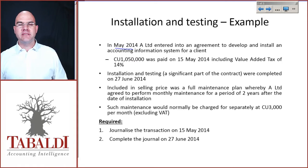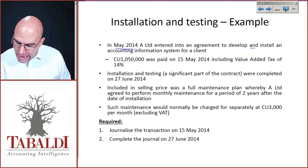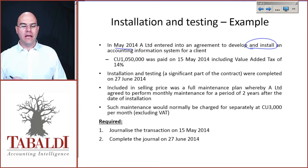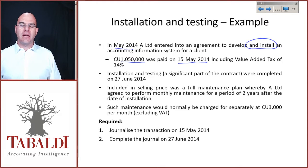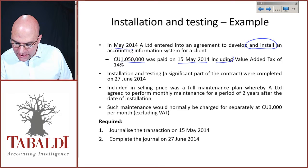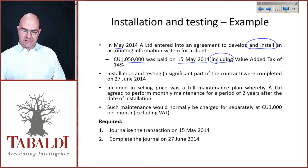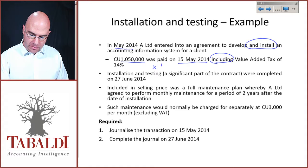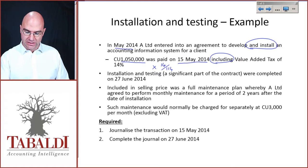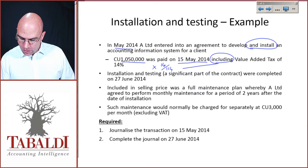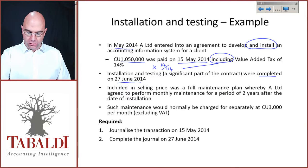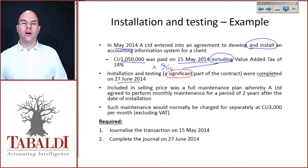In May 2014, A Limited entered into an agreement to develop and install an accounting information system for a client. This cost $1,050,000, paid to A Limited on the 15th of May 2014, and this was stated to include VAT. So we need to multiply by 14/114 to get the VAT amount, because it's inclusive. Installation and testing were completed on the 27th of June, and this was a significant part of the contract.